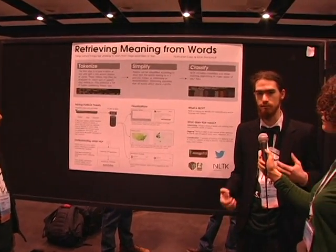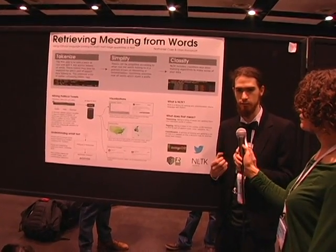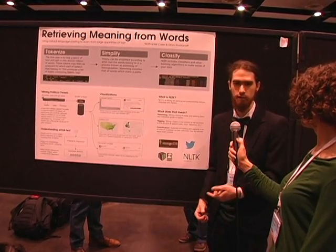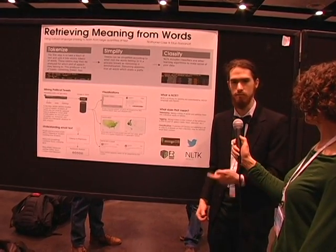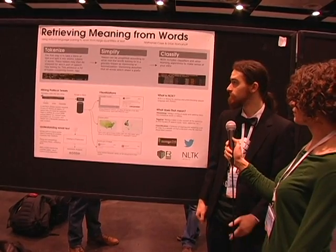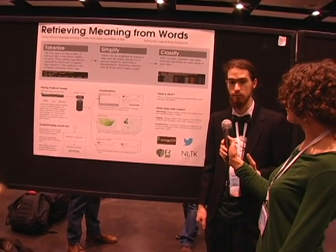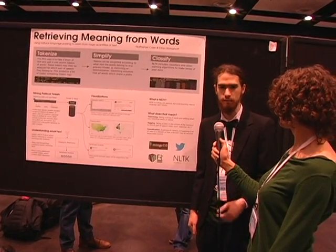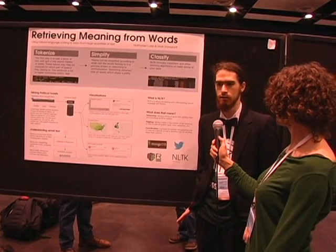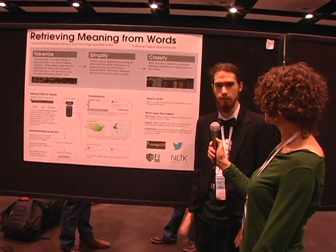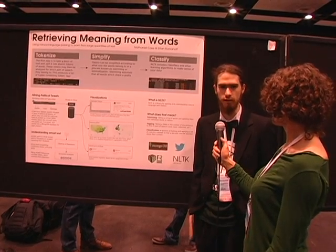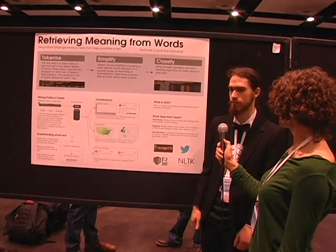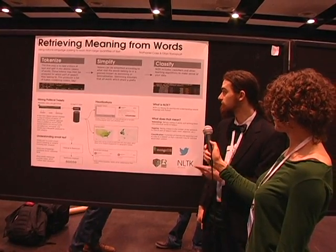Tokenize involves breaking the text down into individual tokens representing words, and then optionally tagging them with part of speech information like noun, verb, or adjective. Simplify is when you take different forms of the same word — like conjugated verbs — and simplify them so they all represent the same word. So 'run,' 'running,' and 'ran' all break down to 'run,' which simplifies your data set.